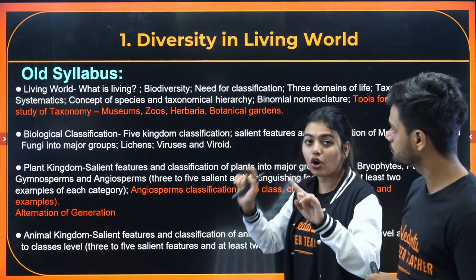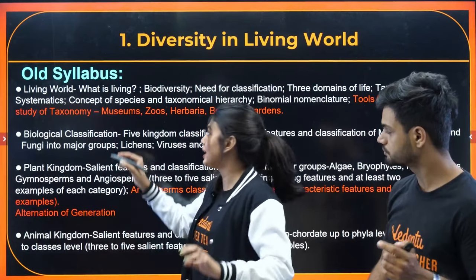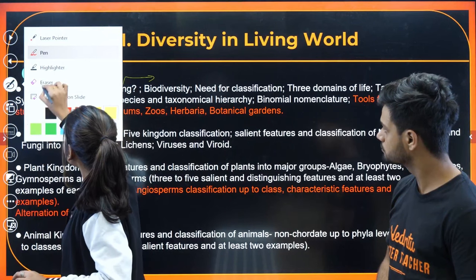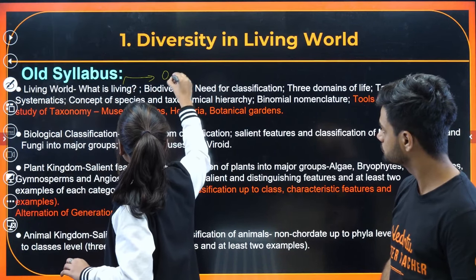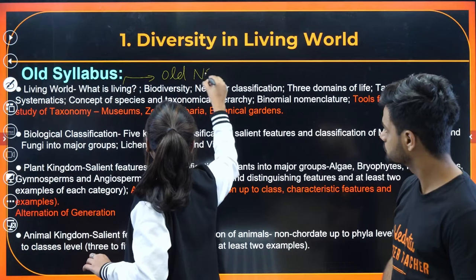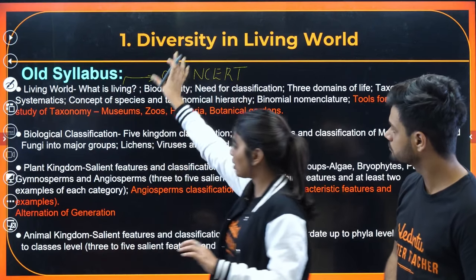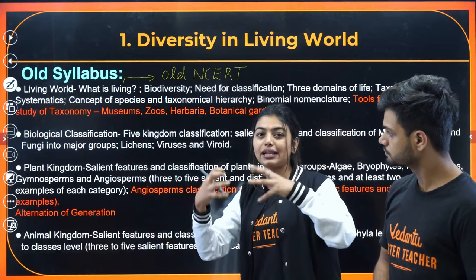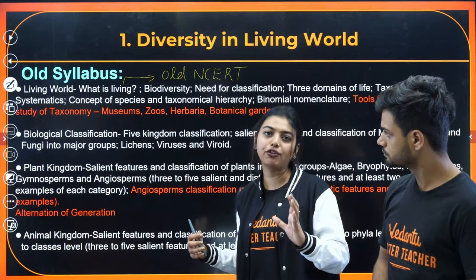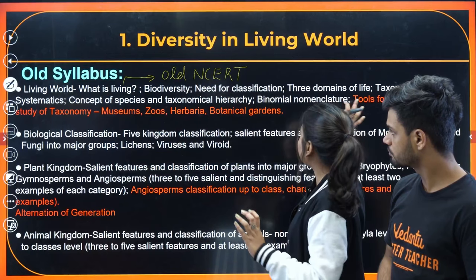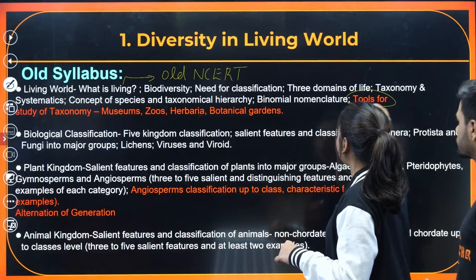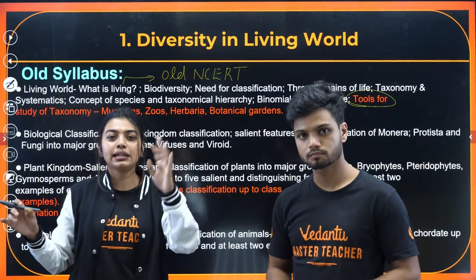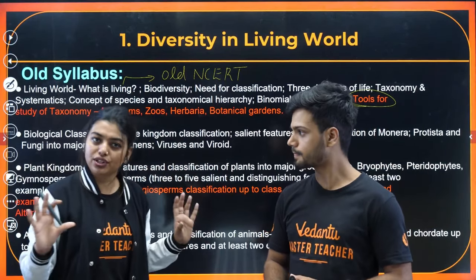Biodiversity is not there in your new NCRT, but it is there in your old NCRT. So you are going to follow it from your old NCRT. This is your 2023 syllabus. We have also added the new syllabus so that anyone who is taking this PDF will find it easy. What is deleted? Tools are deleted — specifically all your museum, zoos, herbarium, taxonomical aids — that entire portion is deleted.